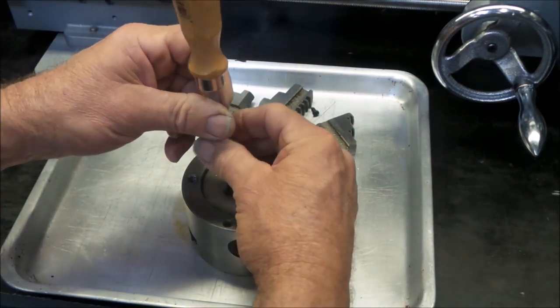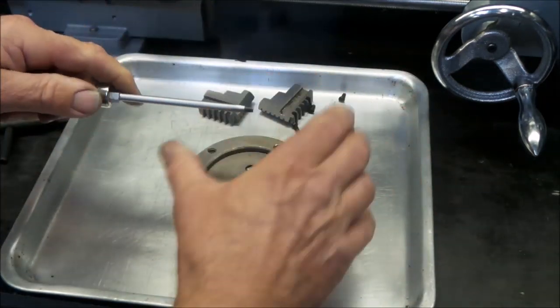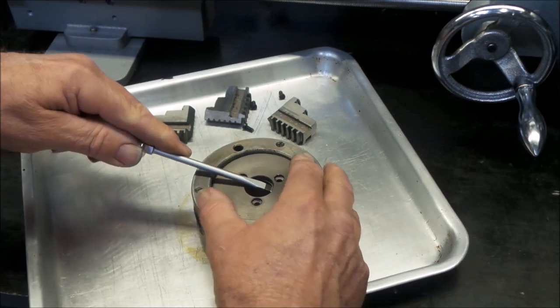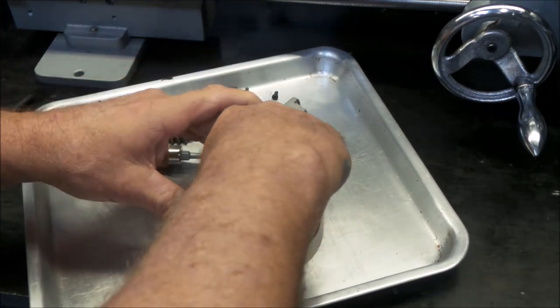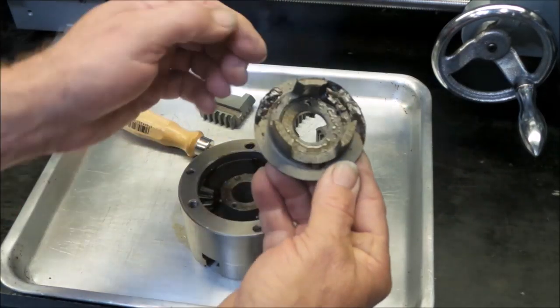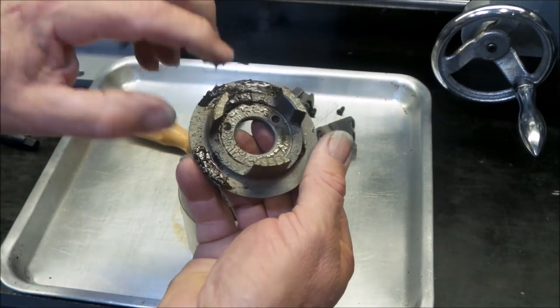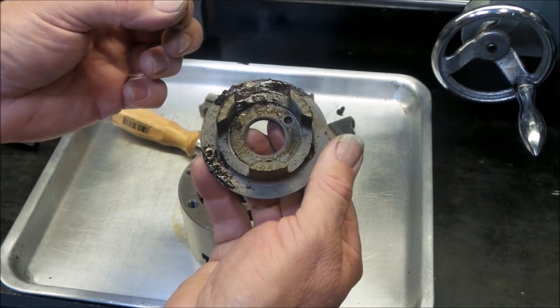This is a 100mm chuck by the way. One of the benefits of these cheap machines is they do come with a 100mm chuck. It's probably a shit 100mm chuck but definitely a 100mm chuck. There's the back plate. Oh, the grip.